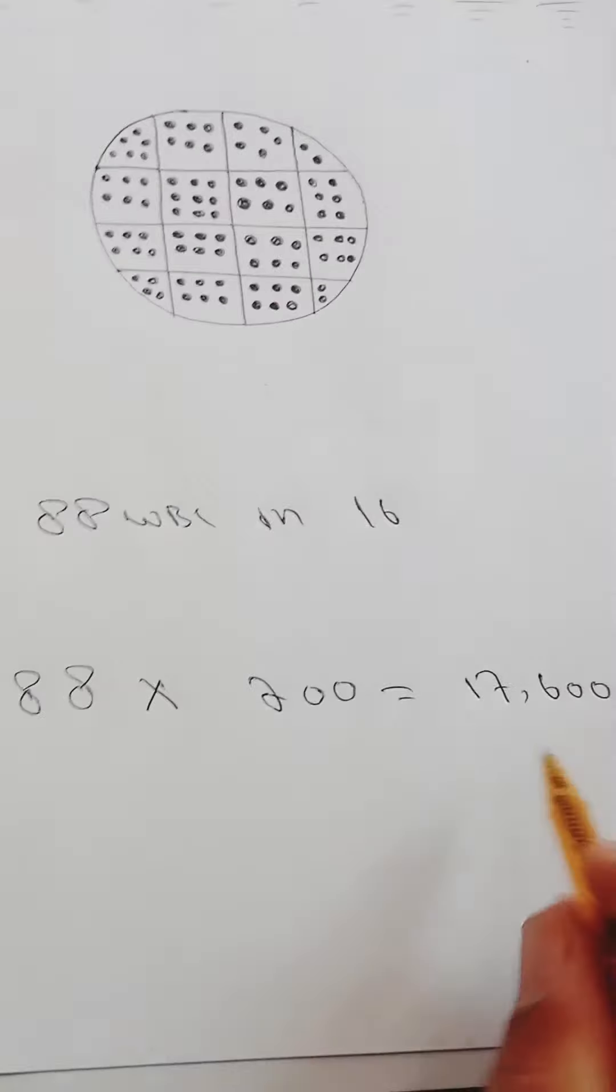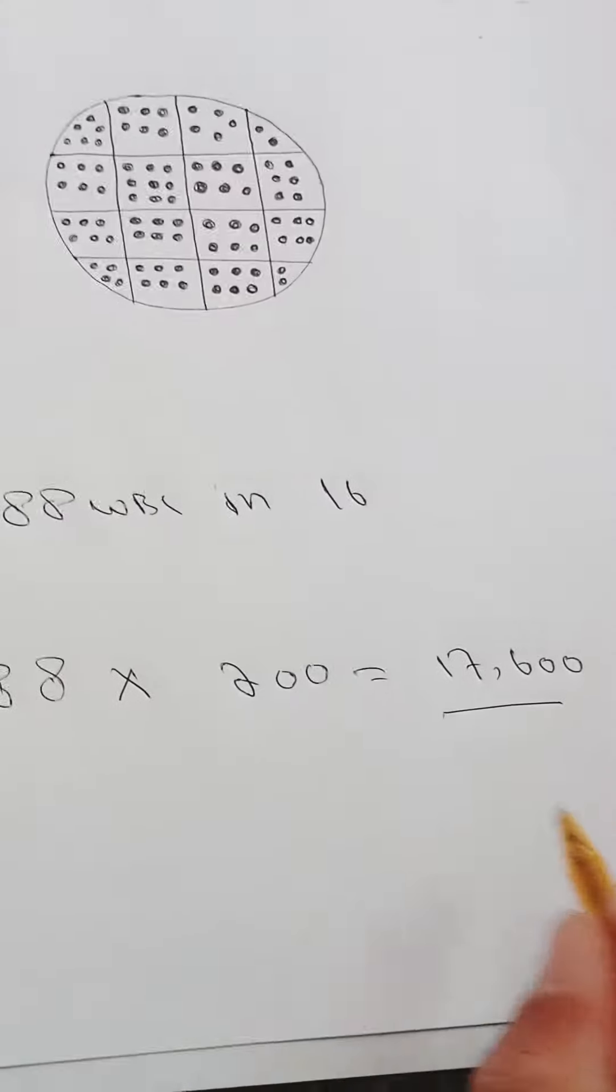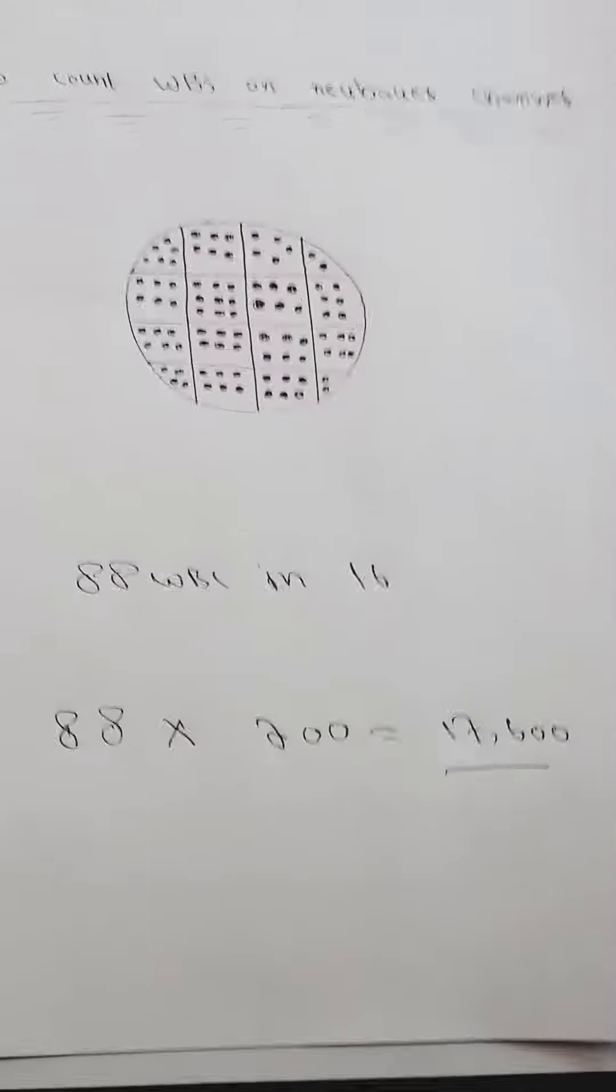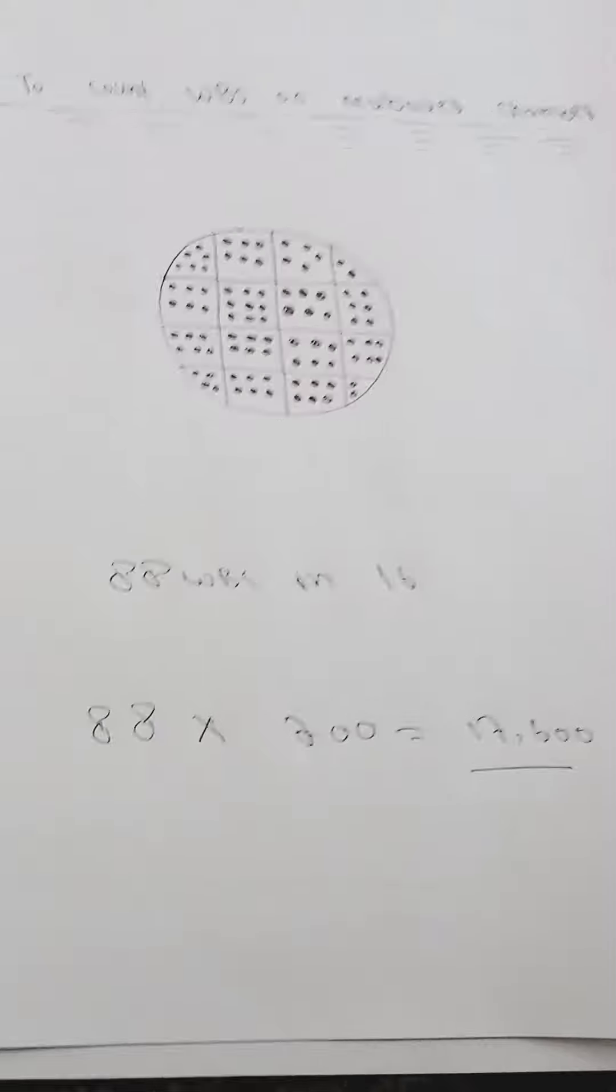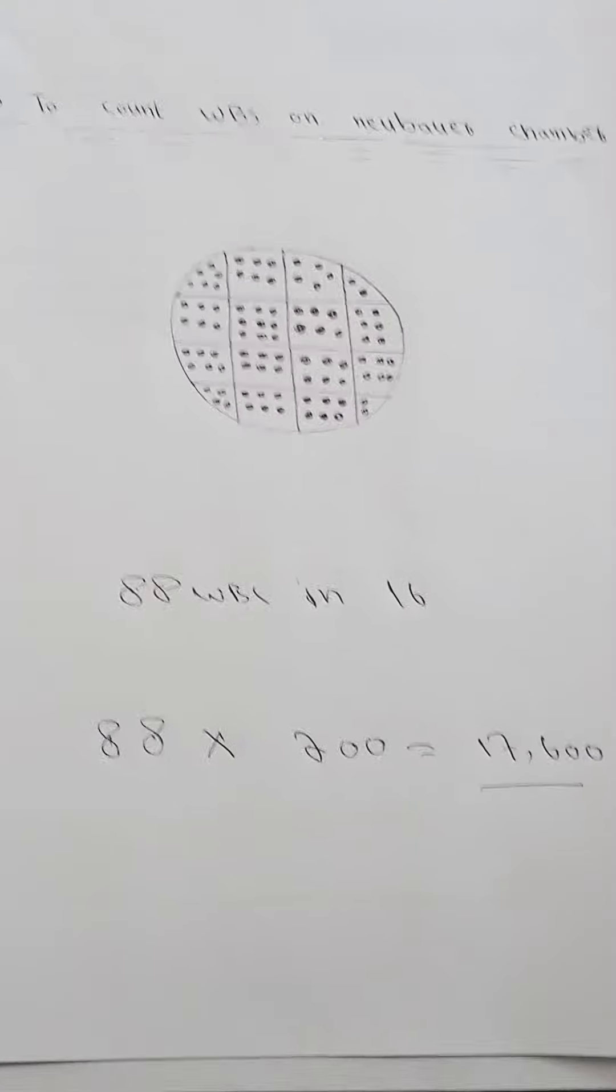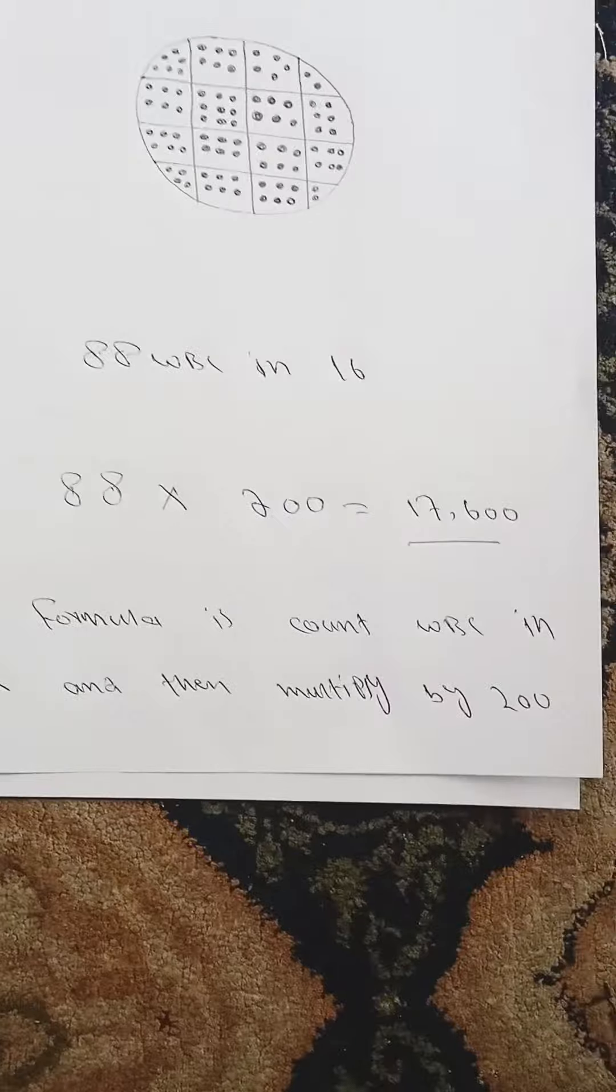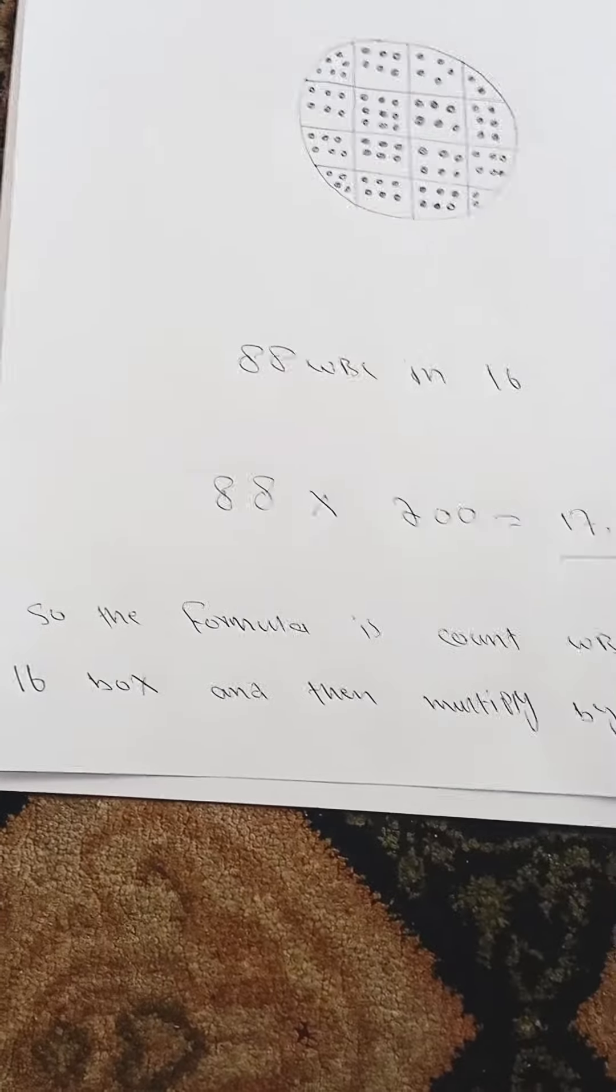17,600. So this is the correct WBC count on Neubauer chamber, and this is the simple formula which is used to find out WBC on Neubauer chamber. The simple formula is to count WBC in 16 boxes and then multiply by 200.